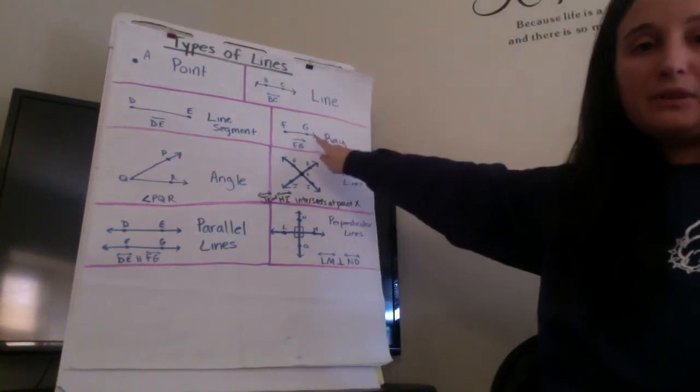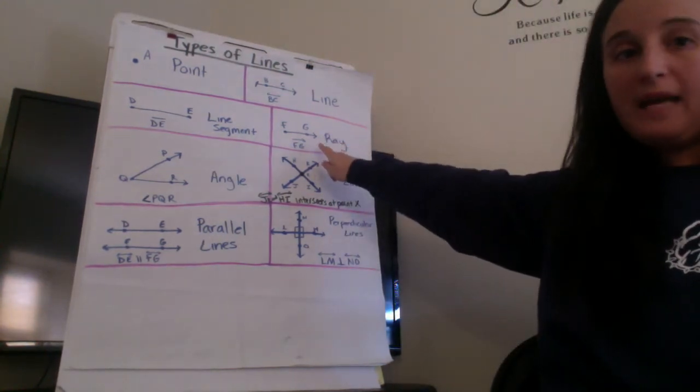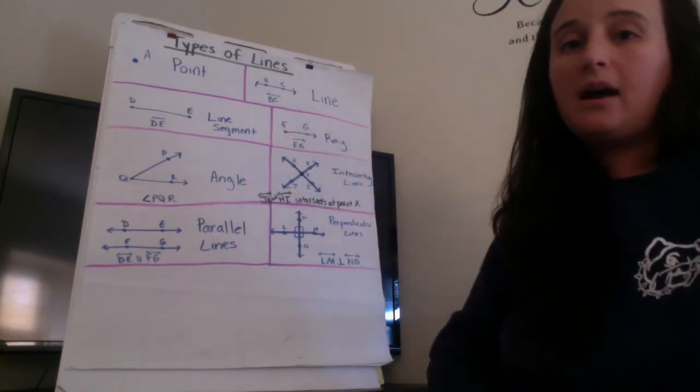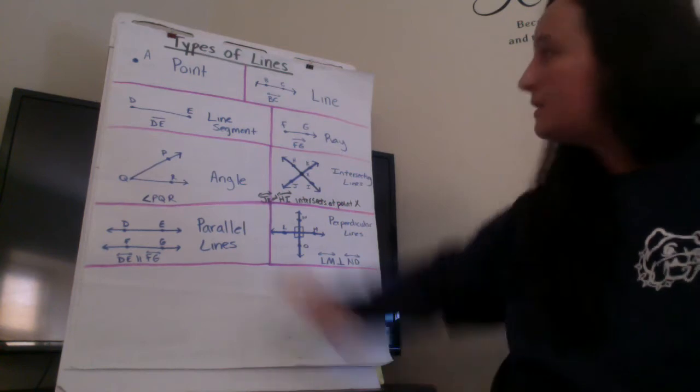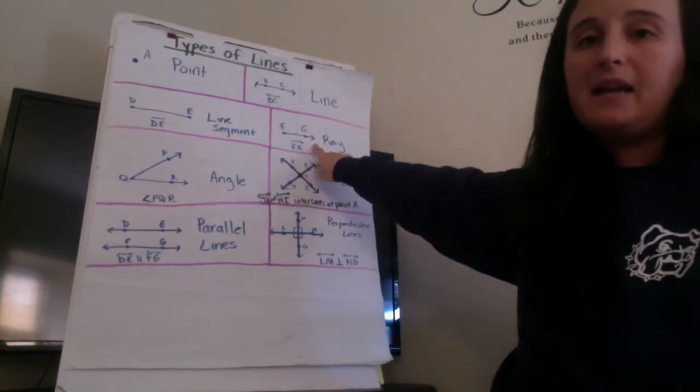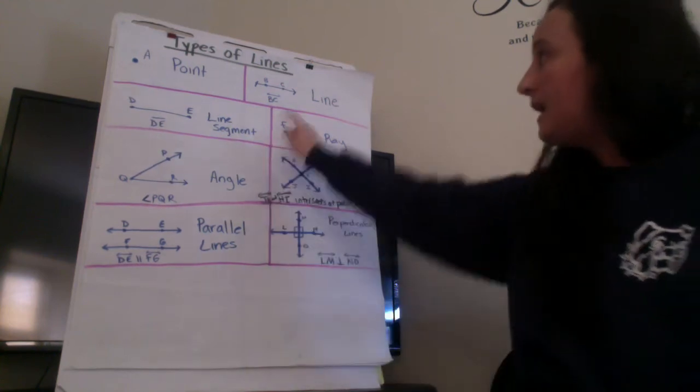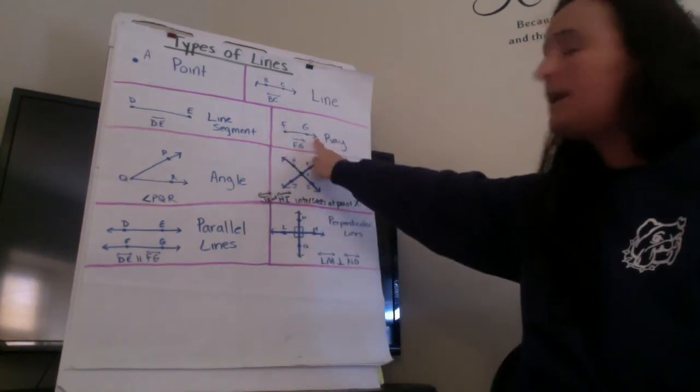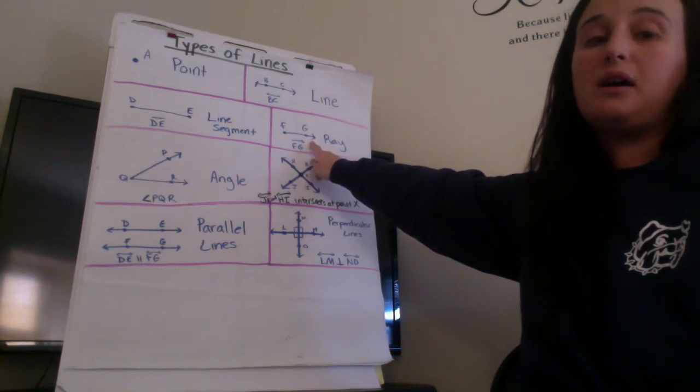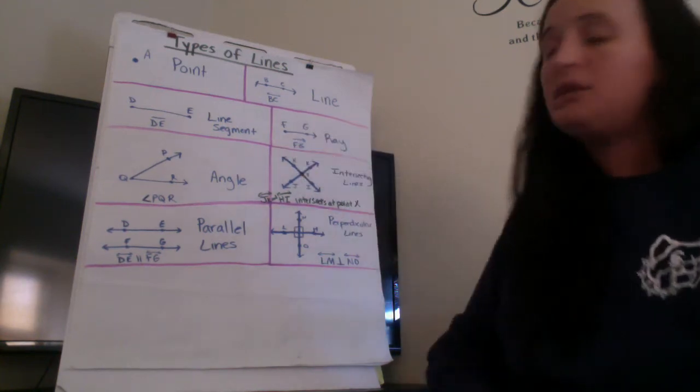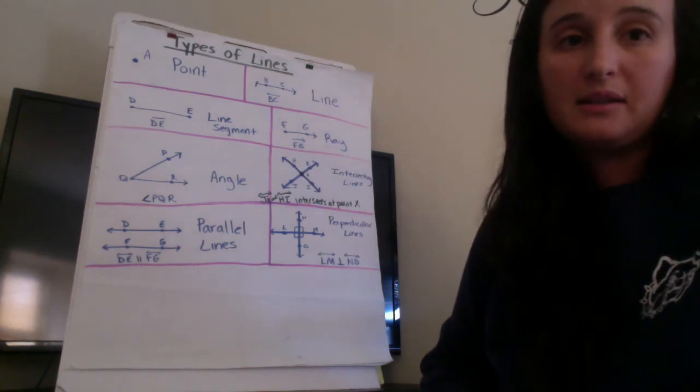Over here we have a ray so we learned about how a ray has one end point here and the other point is in its end point because you'll notice that this side has an arrow, it goes on and on forever only on one side. So a ray has an end point and it has the other side of the line that goes on and on so I would name this ray FG because that's its point.